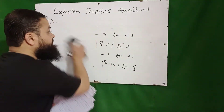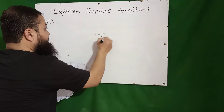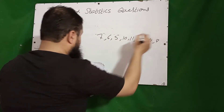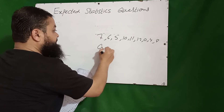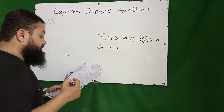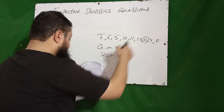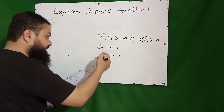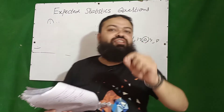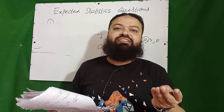For the set of values 7, 6, 5, 10, 11, 12, 0, 4, 8 — which is the best average? Geometric mean — no, because if any value is zero, geometric mean cannot be calculated. Harmonic mean — incorrect, because one over zero is undefined. Both A and B — incorrect. None of these — this is the correct option. Whenever there is a zero value in a data set, geometric mean and harmonic mean will not be the best choice.